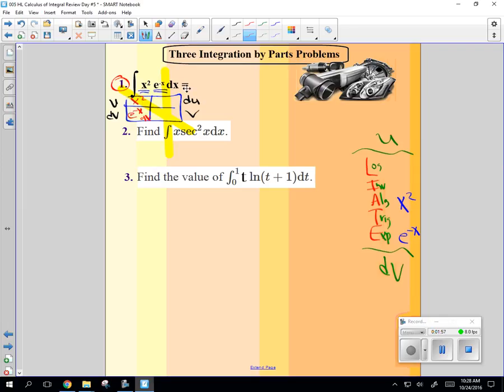Good. Derivative of x squared is 2x dx. The anti-derivative of e to the negative x is negative e to the negative x. The reason this is a difficult subject is because you're doing derivatives and anti-derivatives simultaneously. It's pretty easy to get confused.